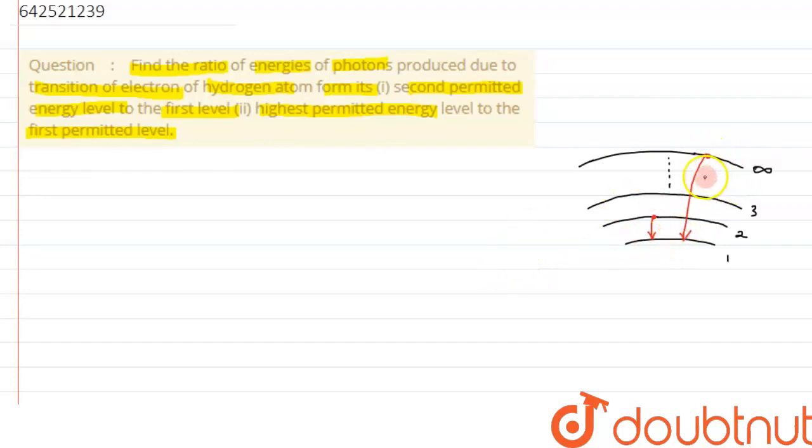In this case, we know it emits photons, and this photon is equal to the energy difference between the 2 orbits. For the first case, we will take, then we will take second case and then we will take the ratio. When the electron is transiting from 2 to 1, the energy difference, that is E2 minus E1, will give us the energy of the photon over here.